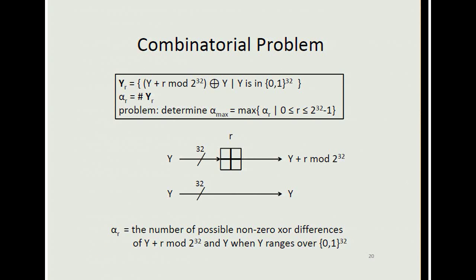The combinatorial problem: let Y_r be the set of {(y ⊕ (y+r mod 2^32)) : y ∈ {0,1}^32}, and set α_r to be the cardinality of Y_r. The problem is to determine α_max, the maximum value of α_r where r is between 0 and 2^32 − 1. That is, for a value y and y+r mod 2^32, we are interested in their XOR difference, and α_r is the number of possible non-zero XOR differences as y ranges over all 32-bit strings.